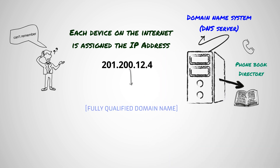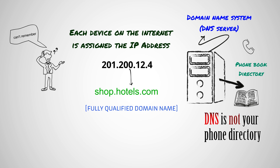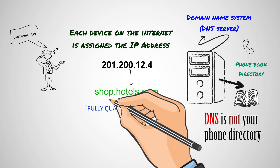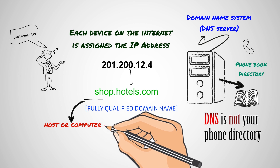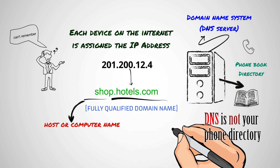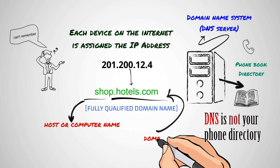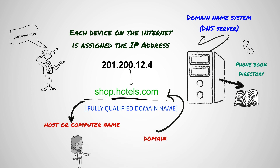A Fully Qualified Domain Name, or FQDN, is the complete domain name for the specific computer you are trying to access on the internet. It consists of two parts: the hostname and the domain name — quite easier to remember.